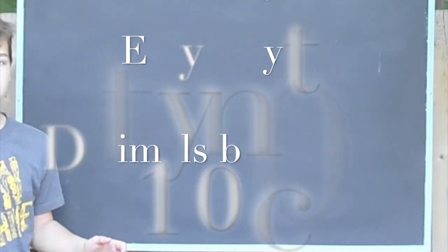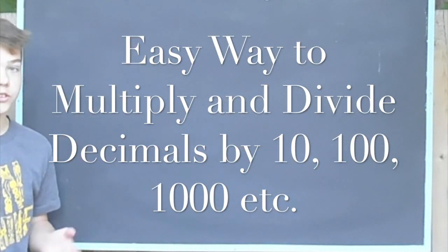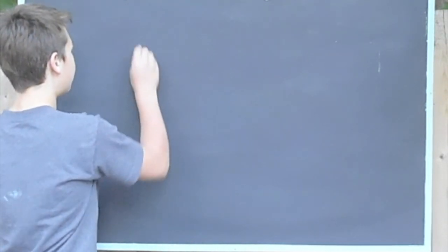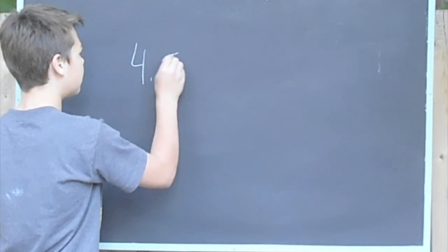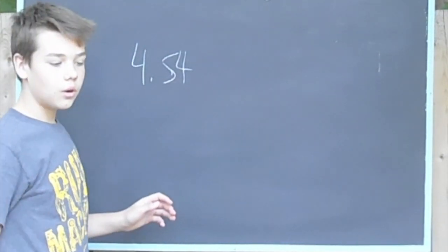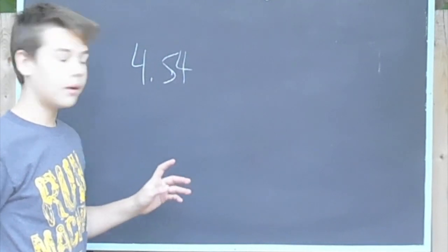Hey, want to know a really cool way to multiply decimals by 100 or 1,000? We're going to take our number, 4.54. We're going to multiply this by 100.